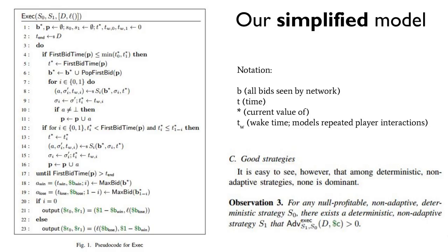We now turn to the question of whether there is a stable equilibrium in this market, and what strategies make sense for trading bots entering this market to pursue. On our left, we show our game theoretic model, EXEC, which models the competition between two strategies, S0 and S1. We also model latencies between both arbitrage bots that are able to see each other's transactions, and these arbitrage bots and the miners including transactions in the network.